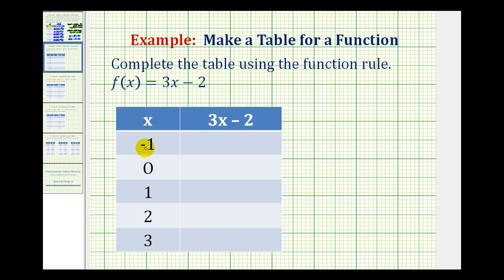So if we're given x = -1, we're going to substitute -1 for x to determine the function value. So we would have 3 times -1 minus 2. This would be -3 minus 2, that's -5. So this means that f(-1) = -5. So -1 is the input and -5 is the output.